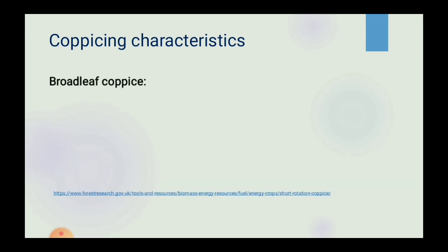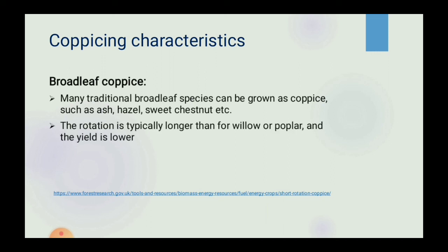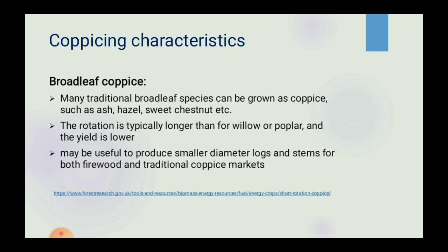Broadleaf Coppice: many traditional broadleaf species can be grown as coppice, such as ash, hazel, sweet chestnut, etc. Rotation is typically longer than for willow or poplar and the yield is lower. It may be useful to produce smaller diameter logs and stems for both firewood and traditional coppice markets.